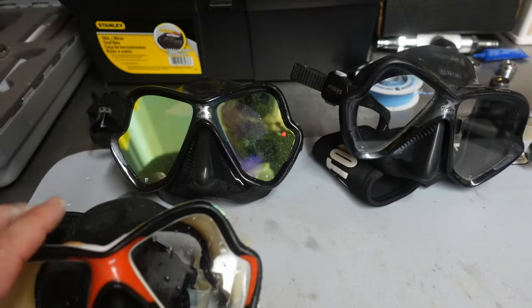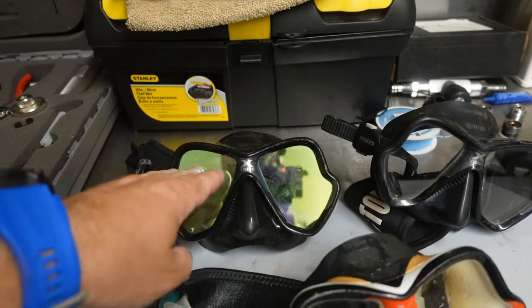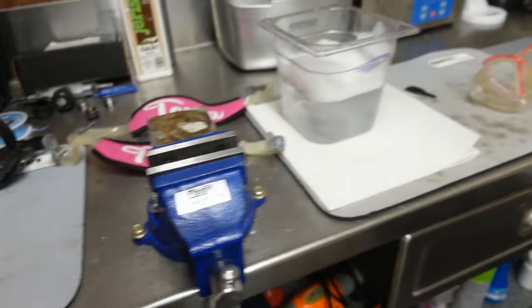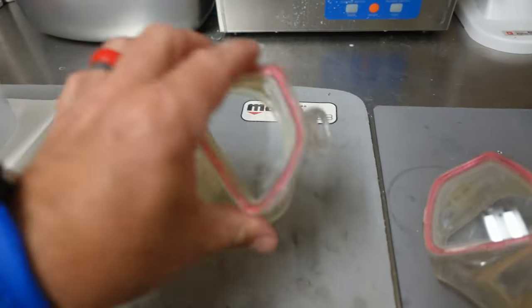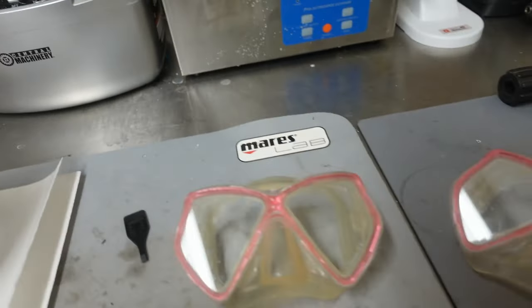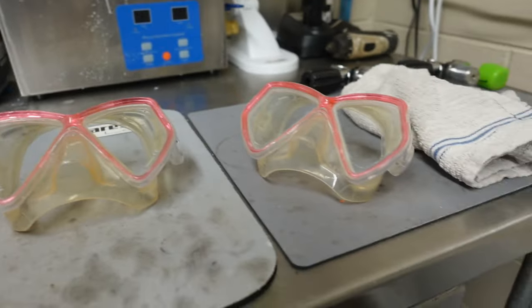So guys, I got several different masks here. These are my three go-to masks. Of course, I got my instructor mask, my salvage mask, and then my tropical diving mask. I've also got two more that's already semi-broke down here. I've got the straps taken off of them. These are my daughter's two personal masks. So you'll see her straps there.